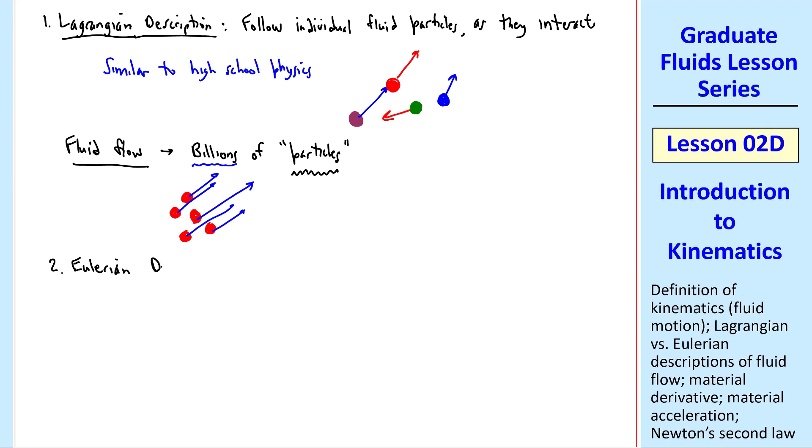That leads us to the Eulerian description, which is usually preferred in fluid mechanics. Instead of following these fluid particles, we have some volume, and we look at a point in that volume, and you watch the fluid that passes by. Instead of keeping track of the speed or velocity of each of these particles, we care only about the particle that happens to be at this point at a given time. We define its velocity vector as u, a function of space coordinate x vector and time.